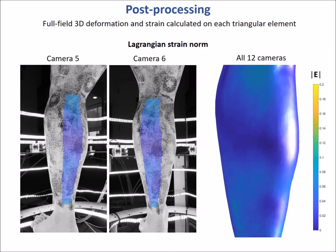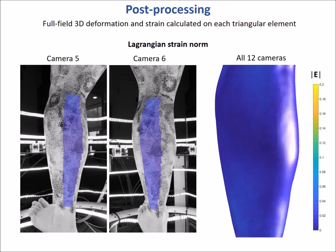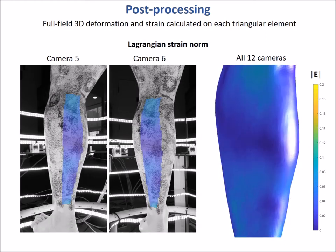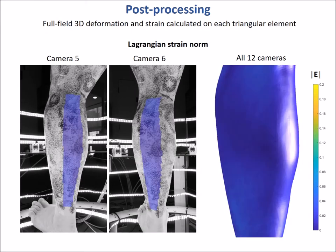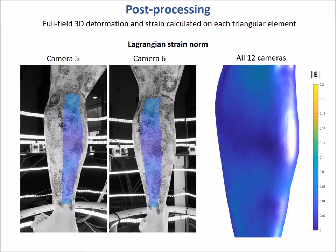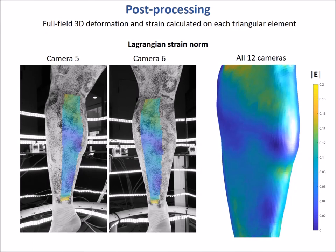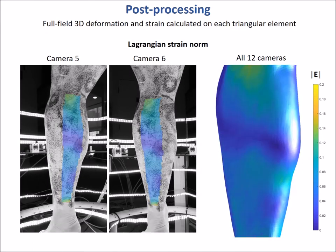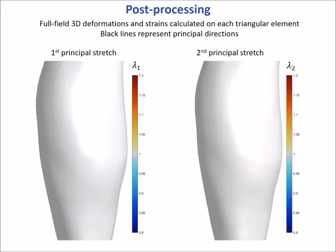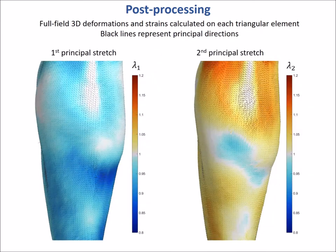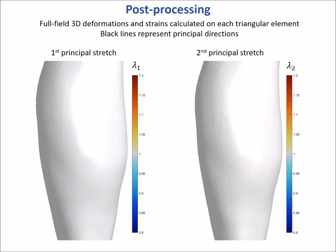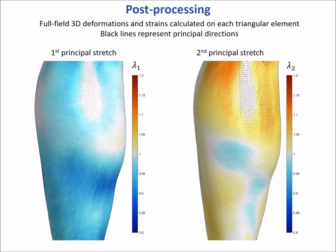The displacements are then used to calculate the local 3D deformation and strain of each triangular element. The figure on the right shows the dynamic values of the Lagrangian strain magnitude, which can also be mapped onto the original images as shown on the left. The first and second principal stretches are plotted here, where colors represent magnitude and lines represent their principal directions.